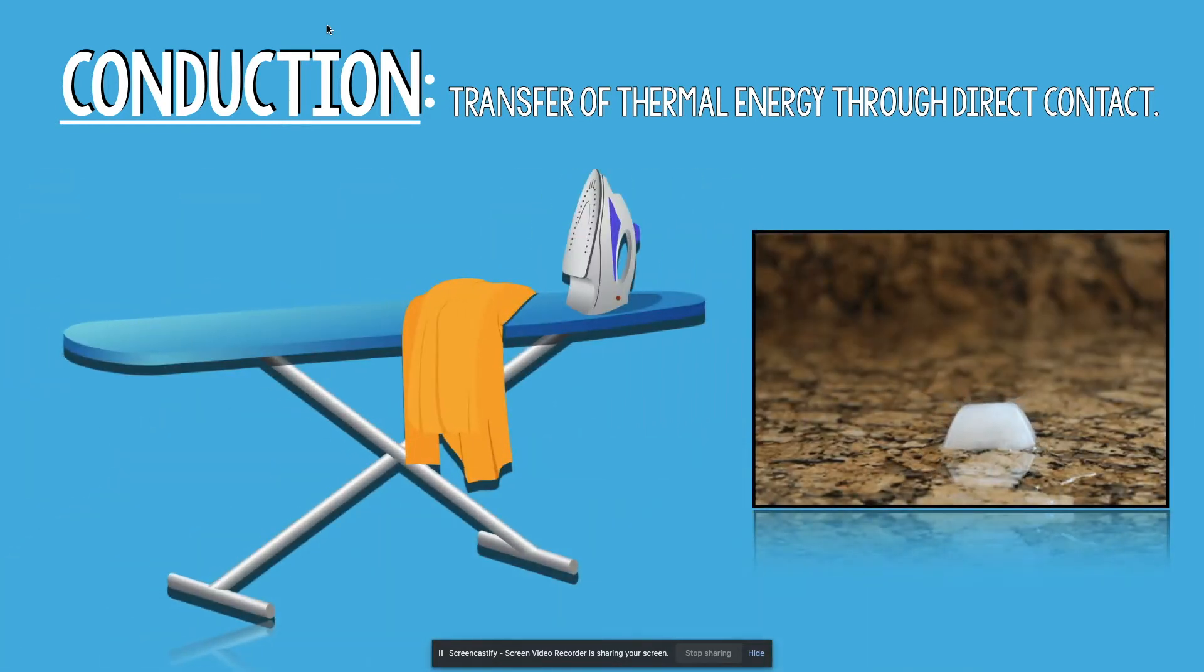Good examples would be an ice cube melting on a table. The heat is being applied by the table to the ice cube, so we have a direct transfer of thermal energy. Or ironing a t-shirt - the iron applies thermal energy directly to the surface of the shirt.